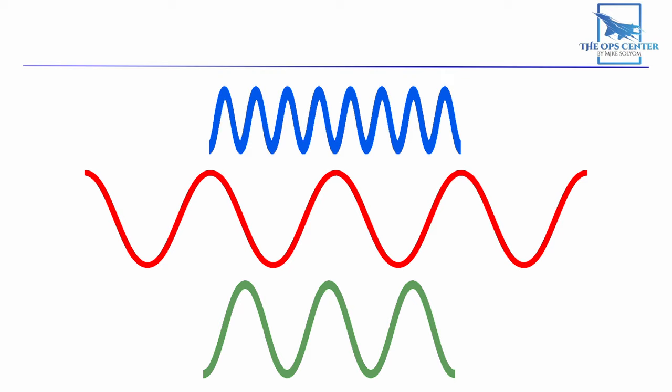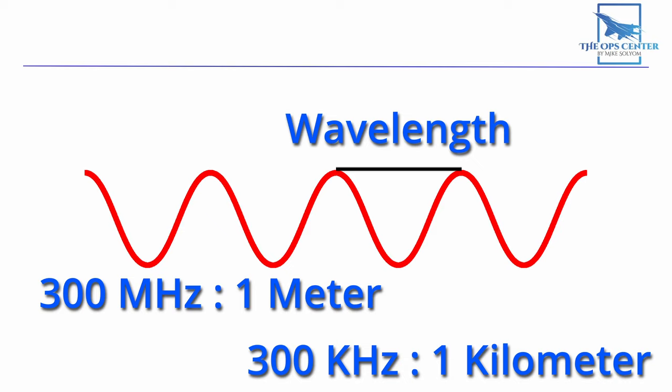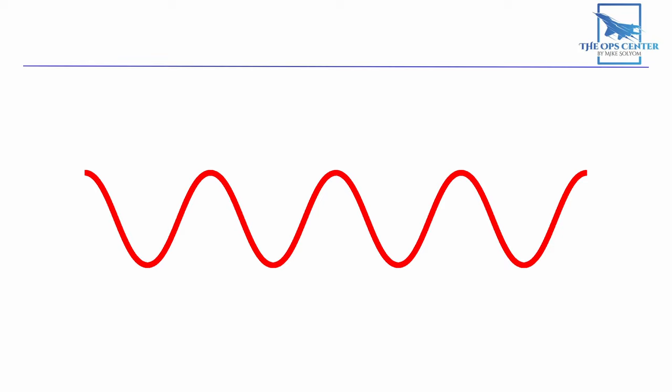At 300 megahertz, the wavelength is one meter. And at 300 kilohertz, it's one kilometer. So we can see that as frequency goes up, wavelength goes down. It's important to know about frequency and wavelength, because radar waves interact with the world differently depending on the length of the wave.